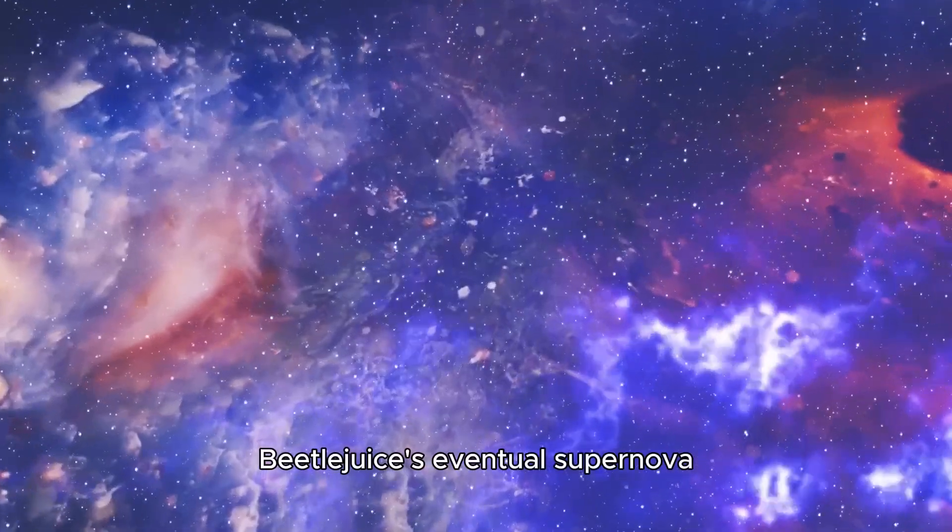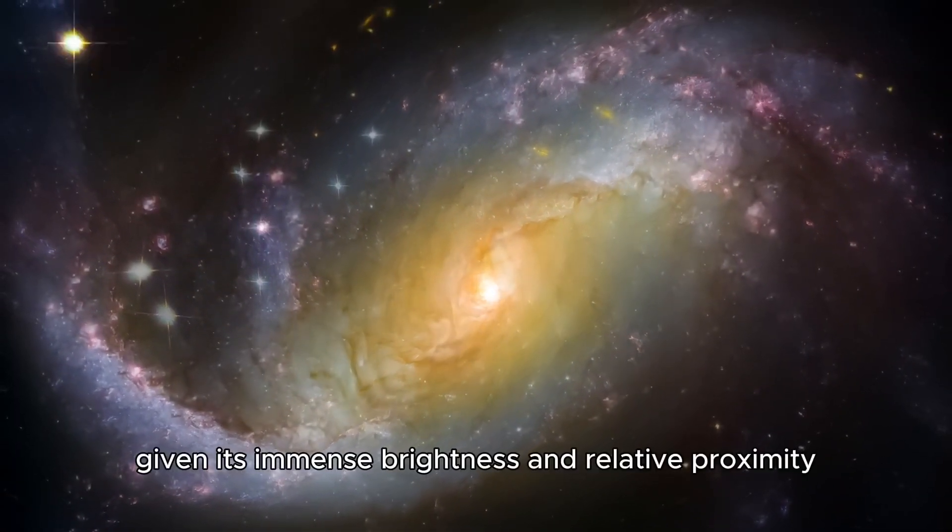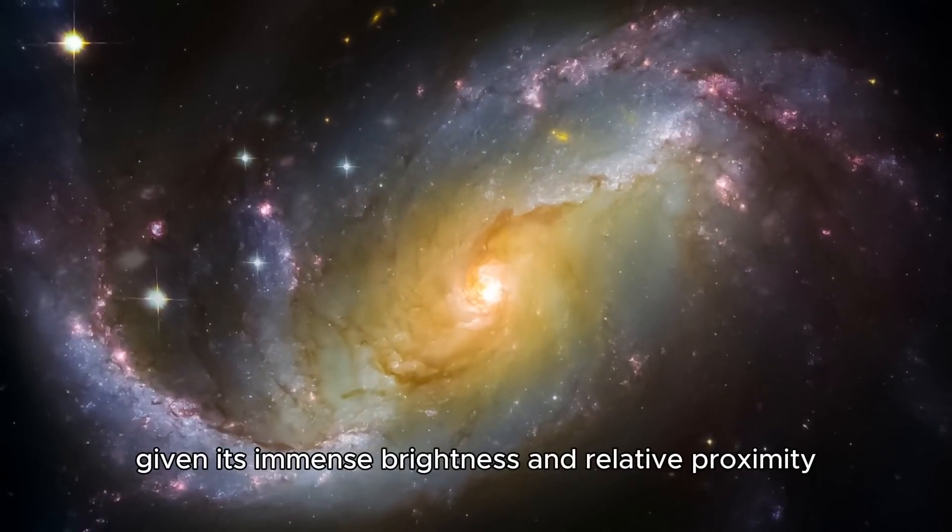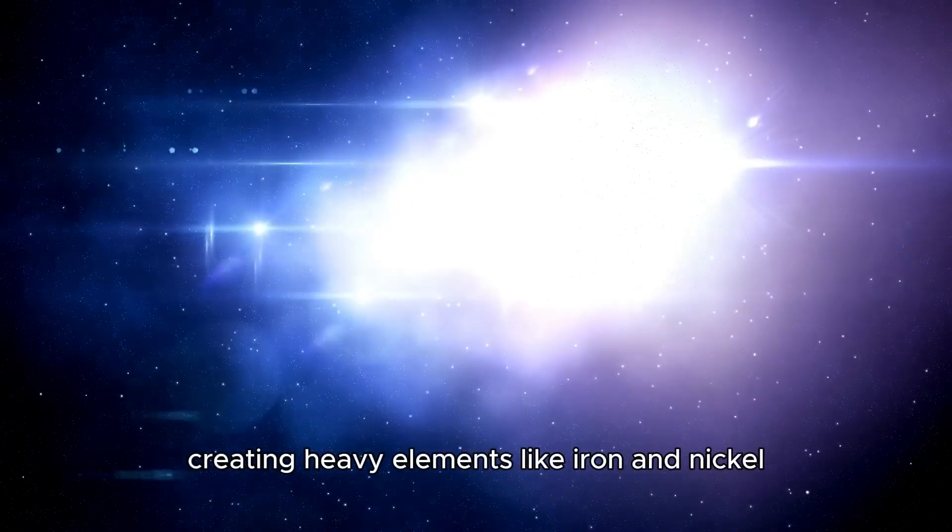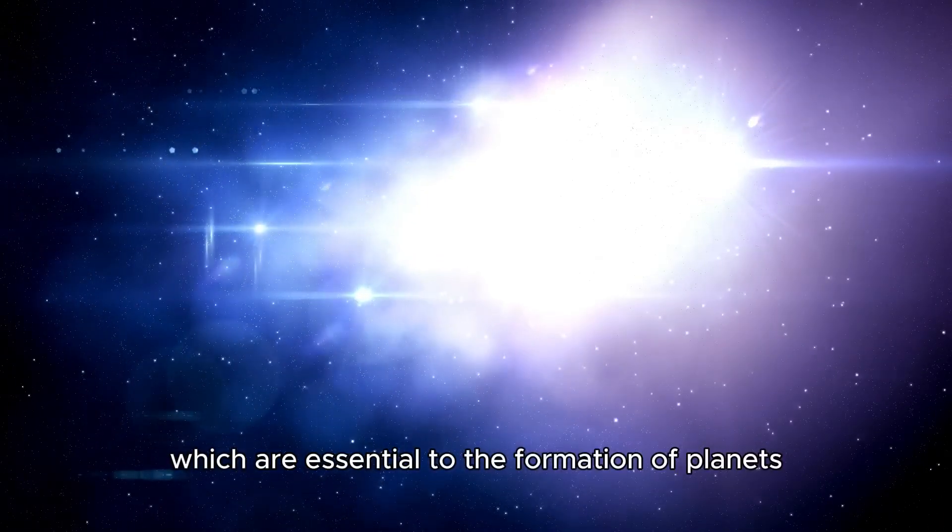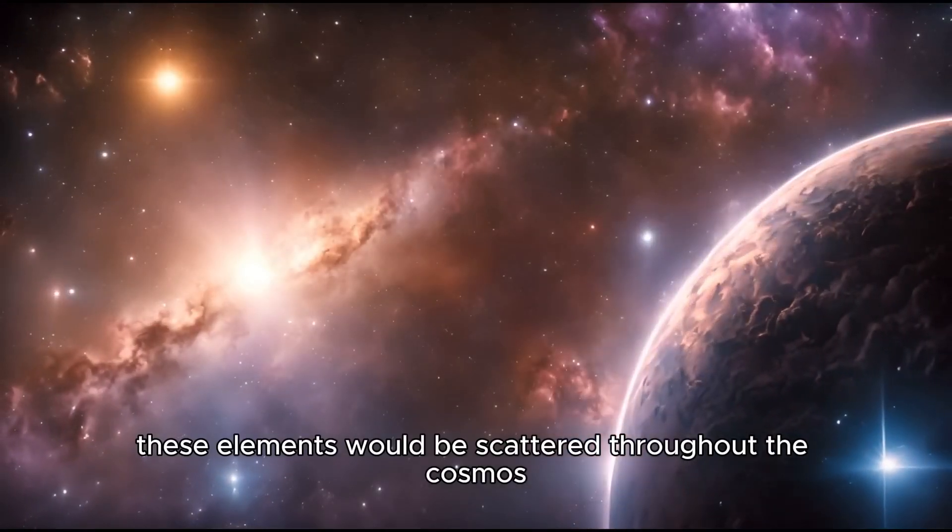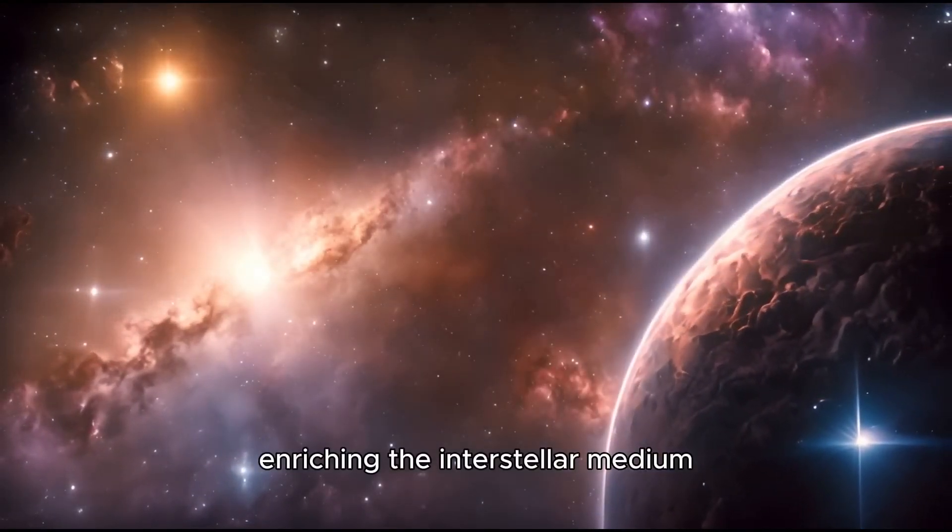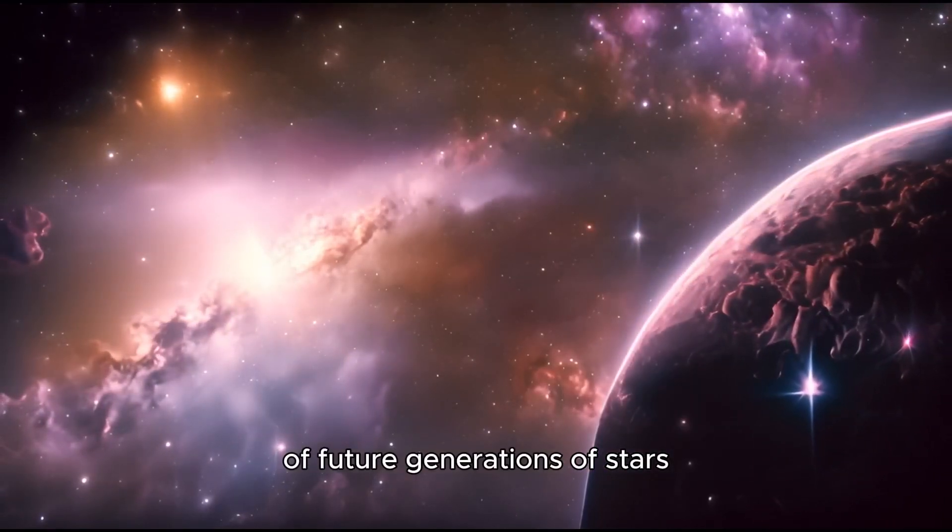A supernova is a cataclysmic event in a star's life cycle, signaling the final stages of its evolution. Betelgeuse's eventual supernova could be visible from Earth without the aid of a telescope, given its immense brightness and relative proximity. This explosion would release vast amounts of energy, creating heavy elements like iron and nickel, which are essential to the formation of planets and other celestial bodies. These elements would be scattered throughout the cosmos, enriching the interstellar medium and contributing to the creation of future generations of stars and planets.